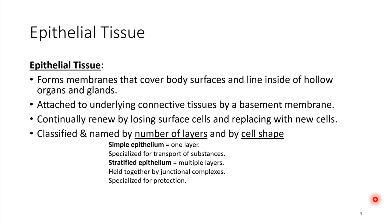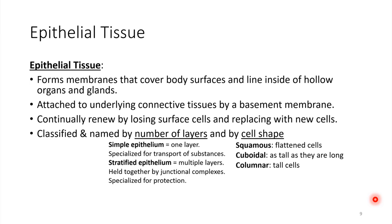Looking at cell shapes, you could have really flattened cells — those are called squamous cells. So we could have simple squamous epithelium. Or we could have simple cuboidal epithelium, meaning one layer of cells that look like little cubes — as tall as they are long. Finally, we could have columnar cells. Think of a rectangle: a cell that's taller than it is wide.